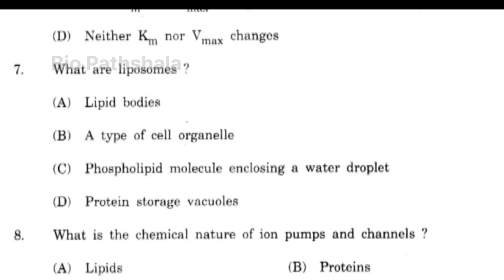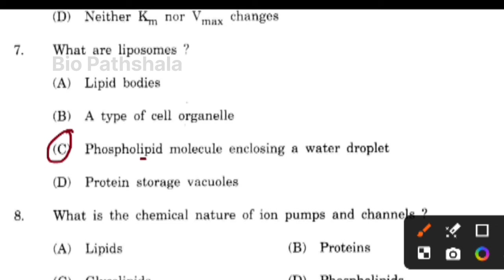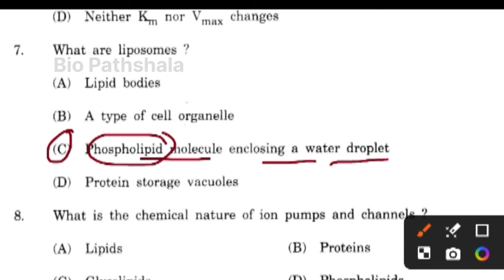Next question: what are liposomes? Liposomes are option number 3 — phospholipid molecules enclosing a water droplet. In a liposome there is a double layer of phospholipid molecules, whereas in micelle formation there is a single layer of phospholipids arranged in a ring form. That is the difference between micelles and liposomes.